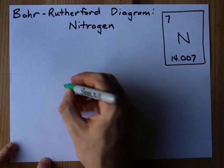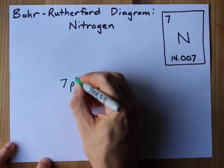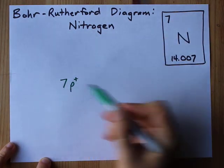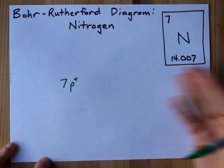What does that mean for us? It means we have seven protons. I'm just copying the atomic number as the number of protons because that's what makes it nitrogen.